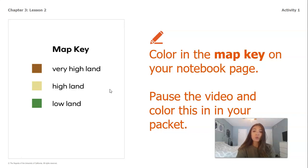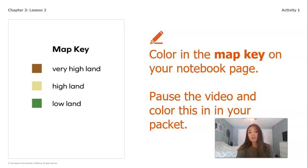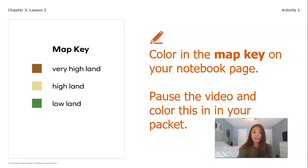Go ahead and pause this video. On your worksheet you are going to color in the map key: brown to show very high land, yellow to show high land, and green to show low land.